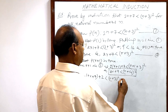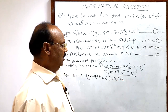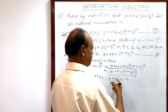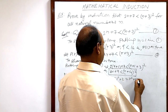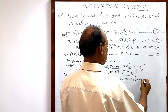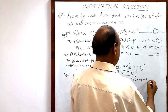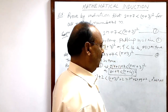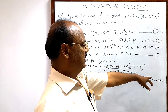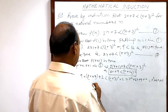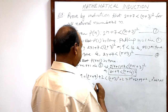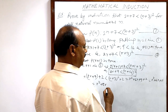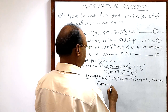Replacing 2r + 7 with (r+3)², the expression becomes greater than (r+3)² + 2. Expanding this gives r² + 6r + 9 + 2 = r² + 6r + 11. Now, to obtain (r+4)² = r² + 8r + 16, we rewrite r² + 6r + 11 accordingly.